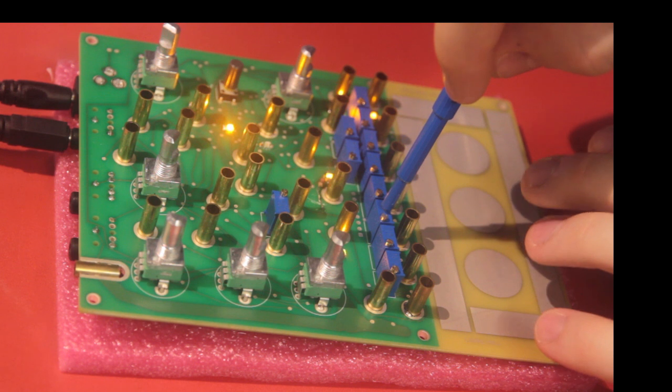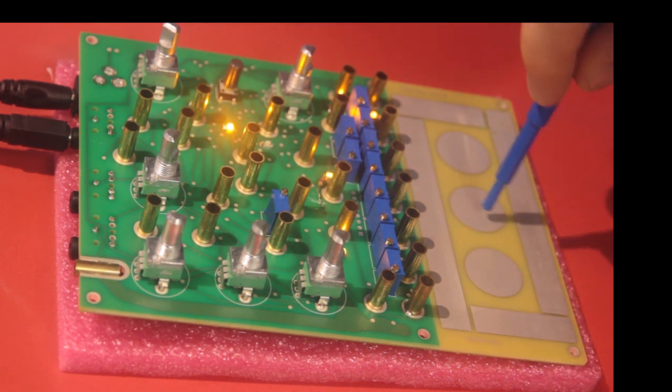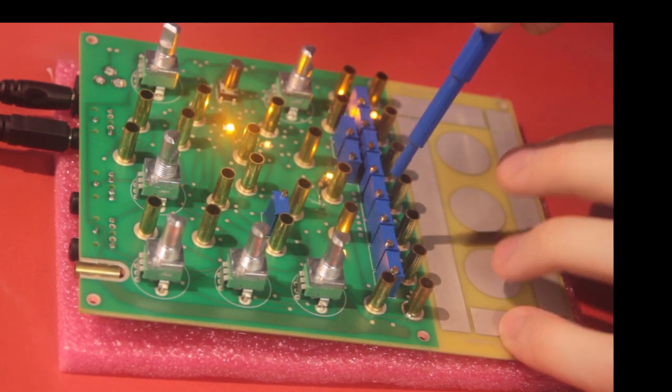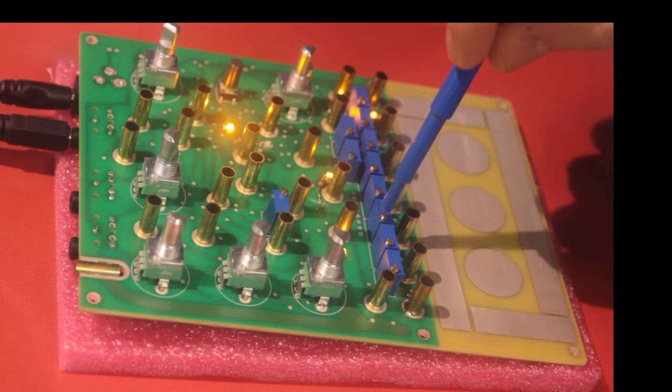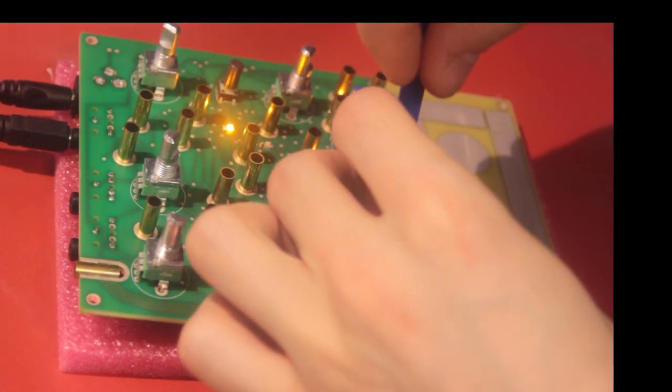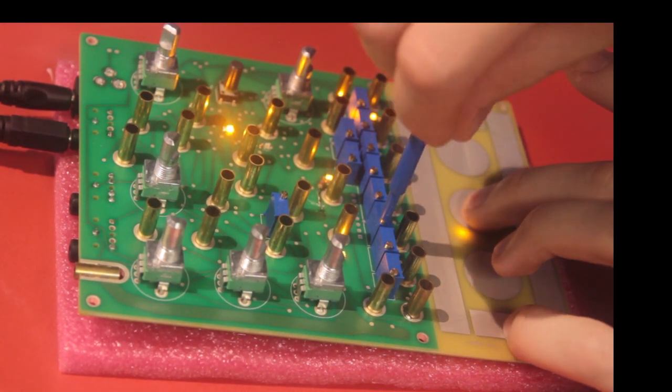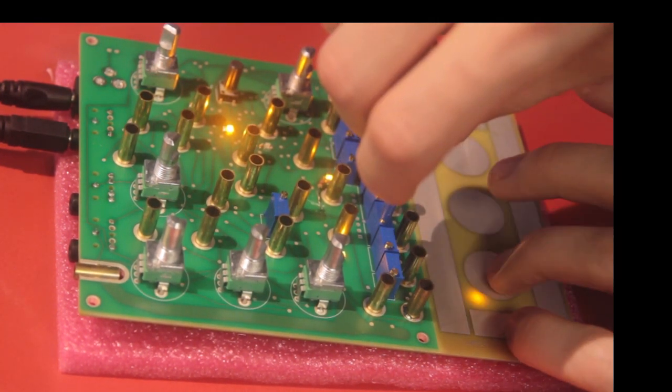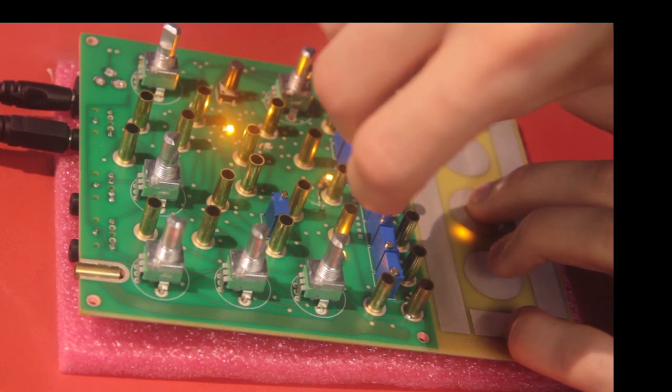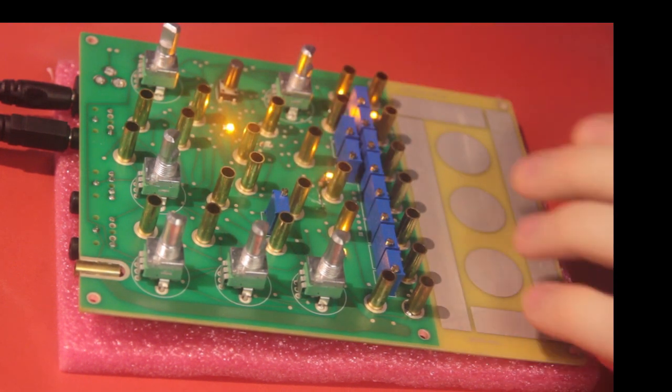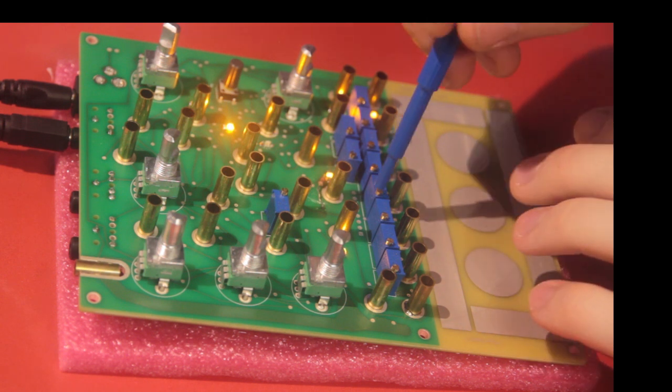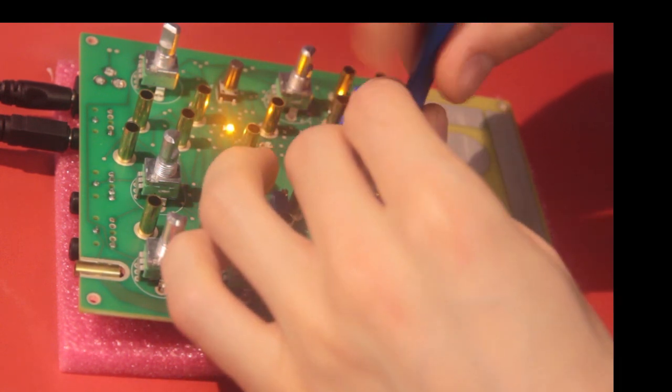The third trim pot is just the middle key. Put the trimmer on there. And the fourth trim pot is the first two circle keys.